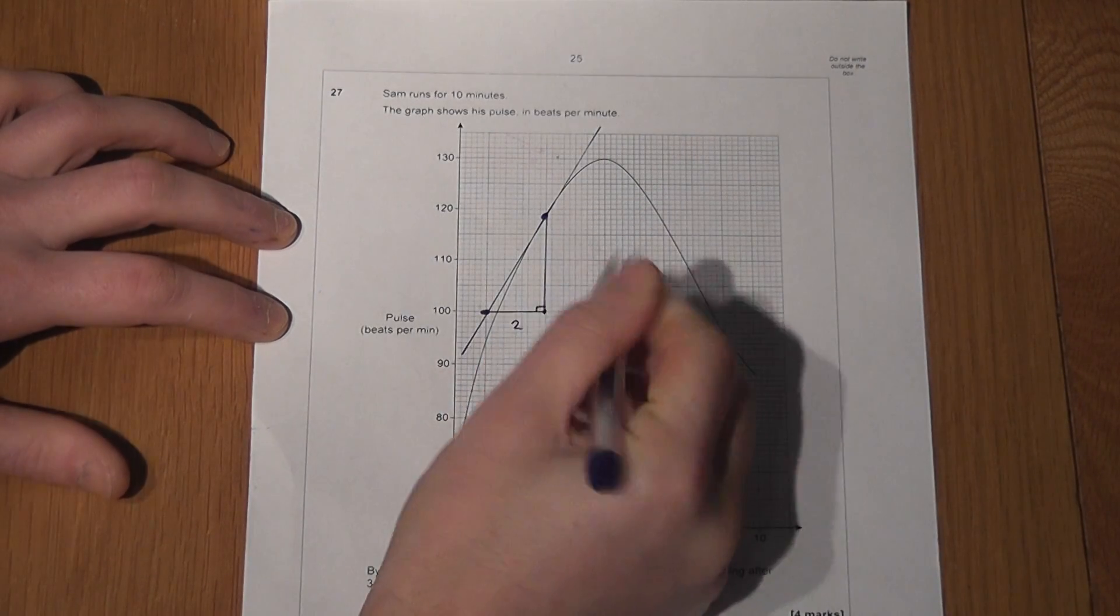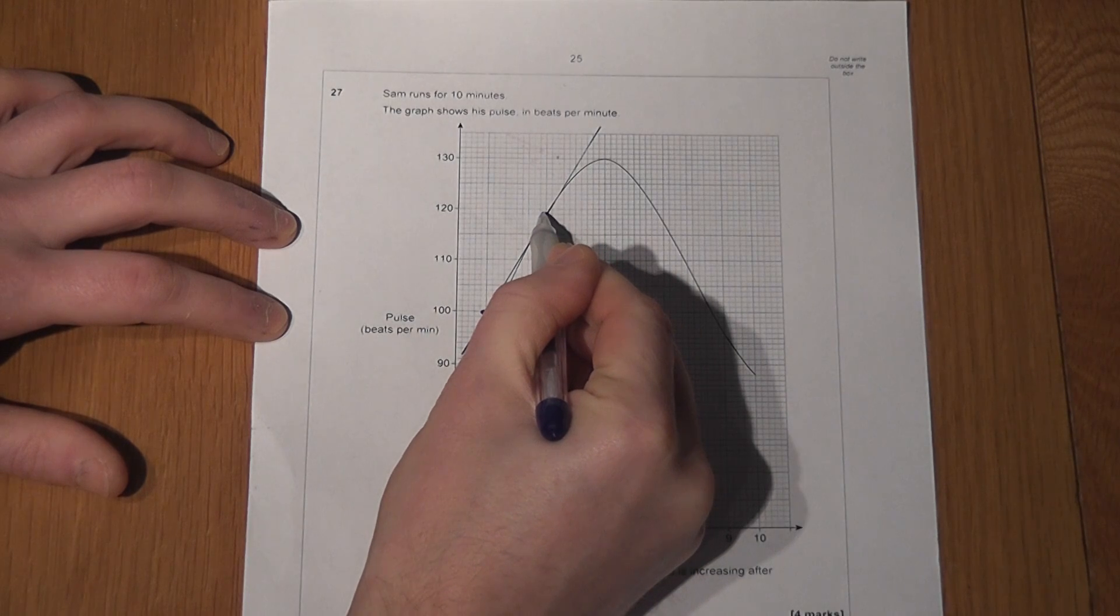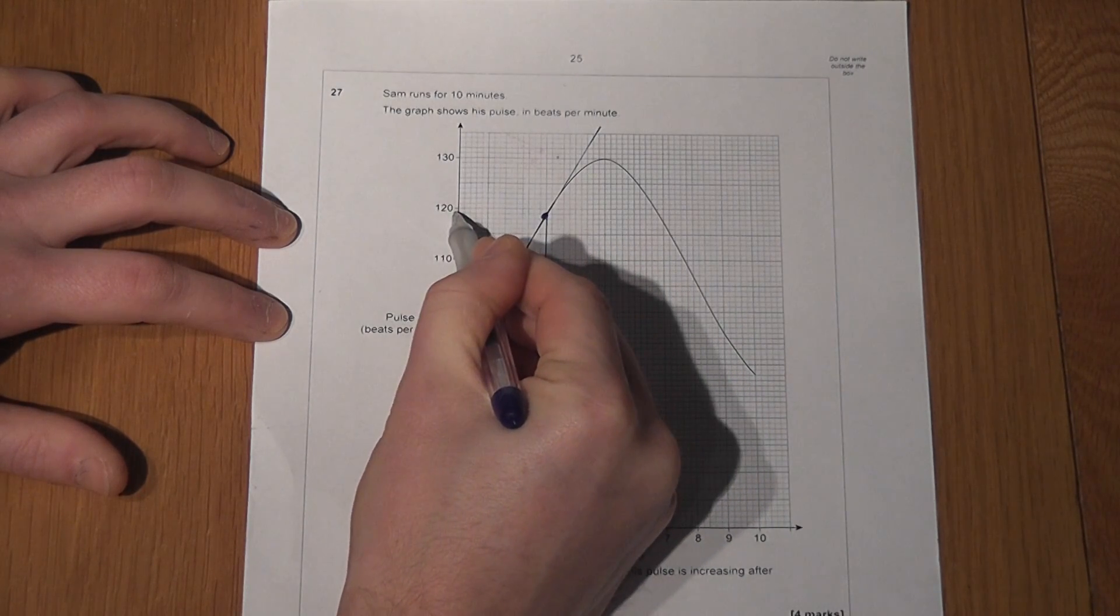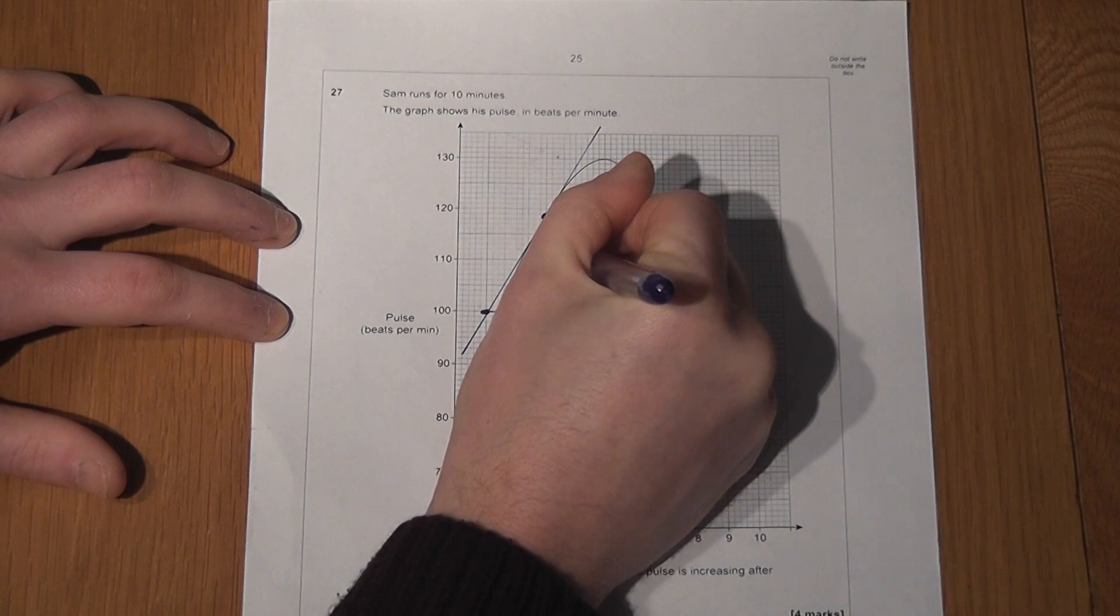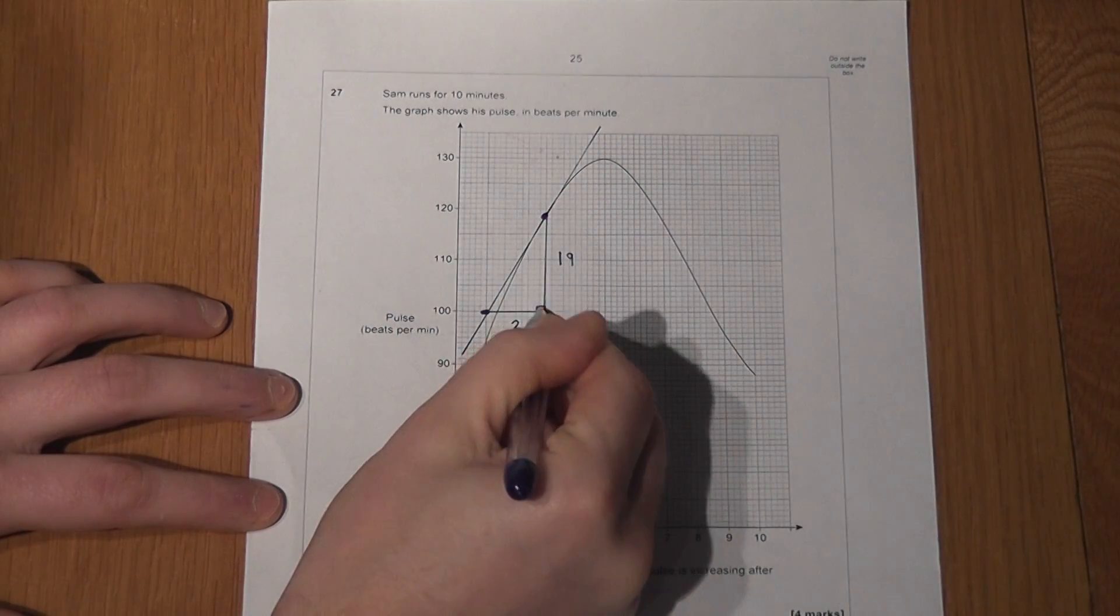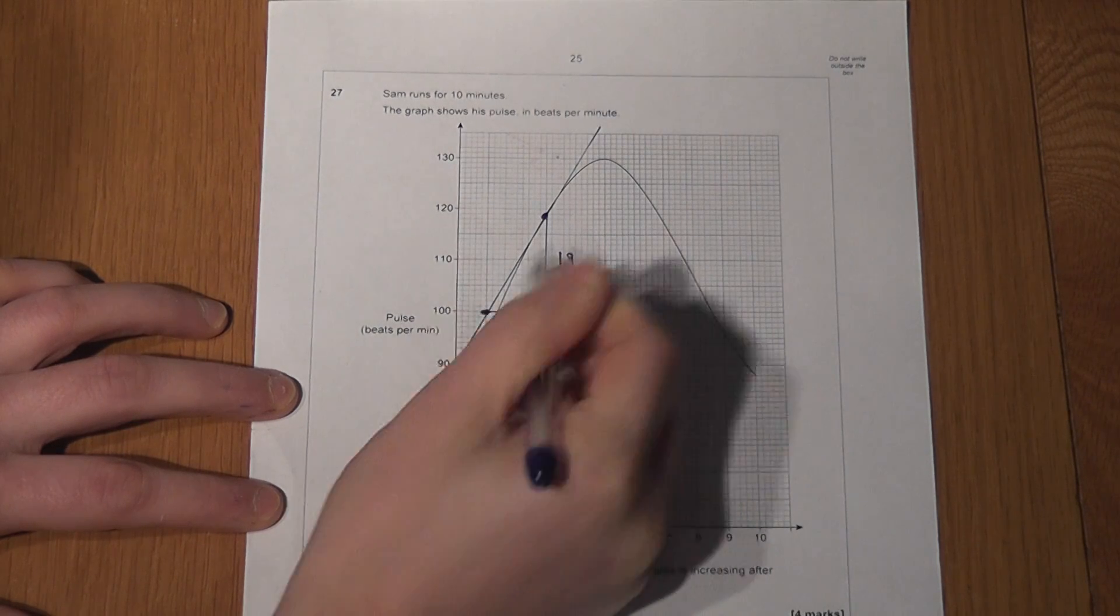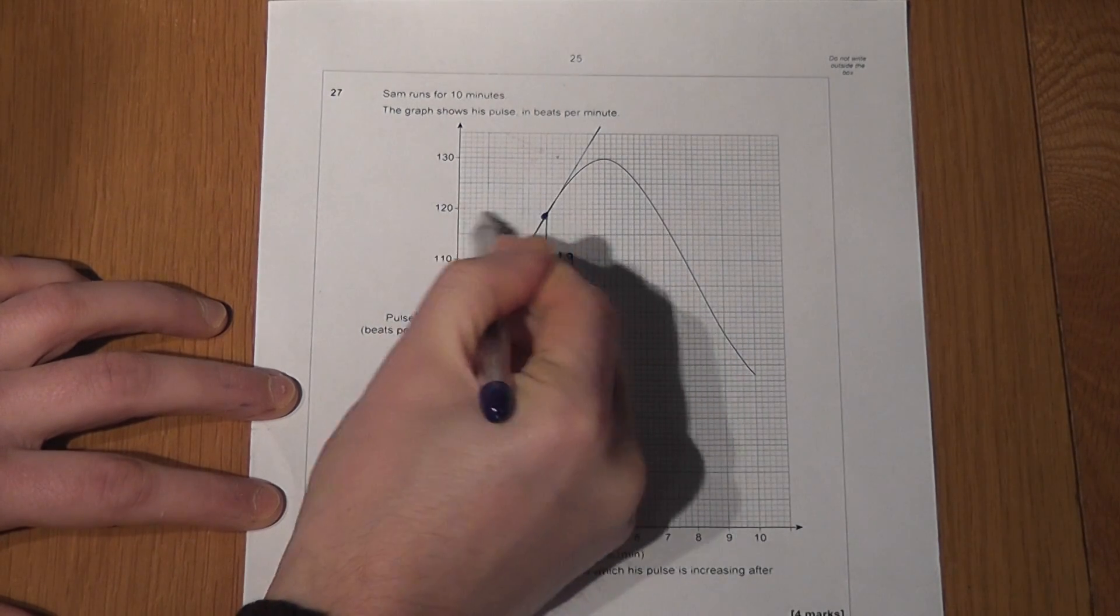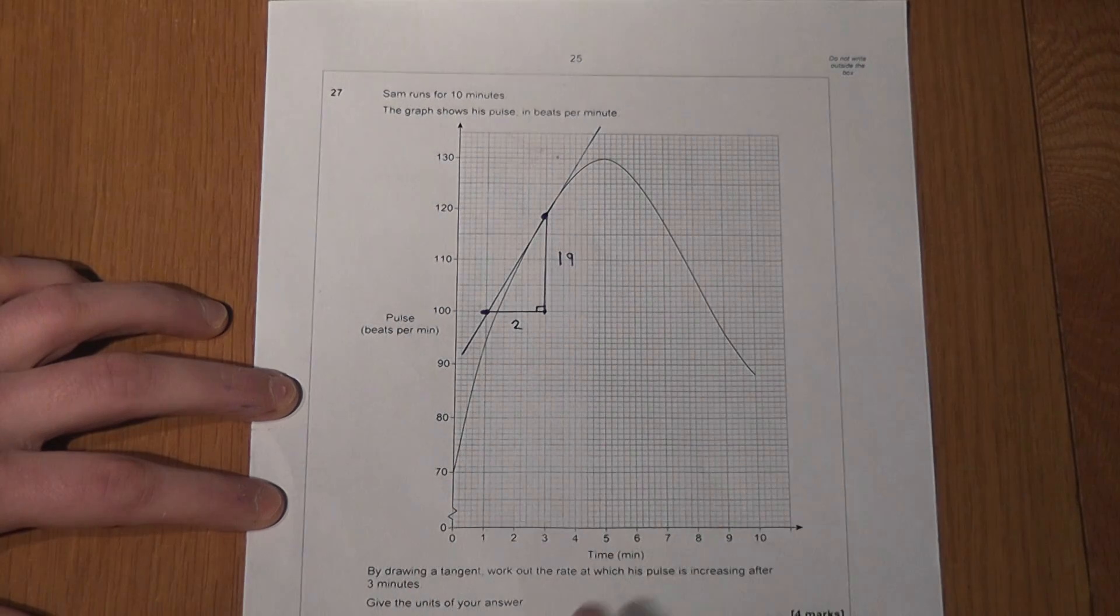Well, it's gone from 100 to 119. So that's gone up by 19. Again, that there happens to be 100. This happens to be 119. So therefore the increase is 19.